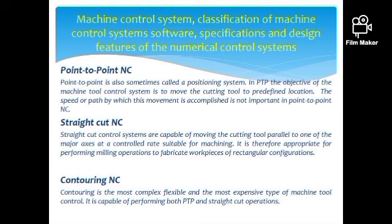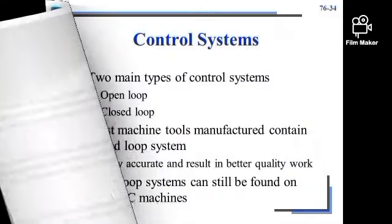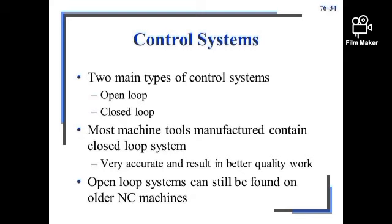Point-to-point is also called a positioning system. In PTP, the objective of the machine tool control system is to move the cutting tool to a pre-defined location. The speed or path by which the movement is made is not controlled. Control system has two main types: open loop and closed loop.